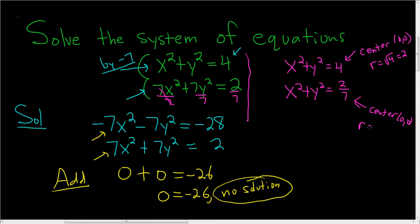So if you do a rough sketch, you basically have two circles centered at the origin. And solutions to the system of equations correspond to the points of intersections. So since these circles never intersect, there is no solution. Kind of a nice way to think about the problem graphically.